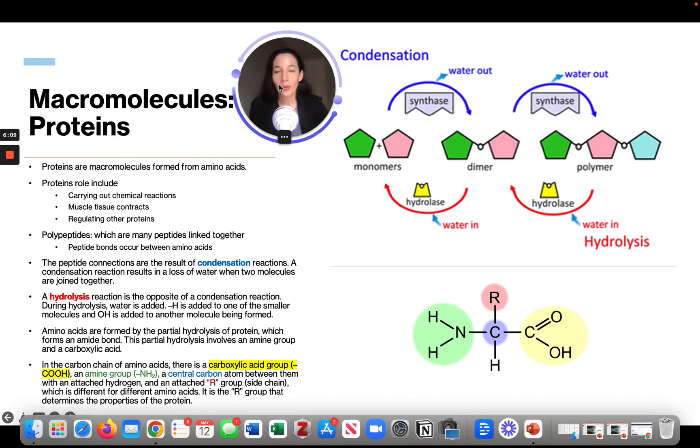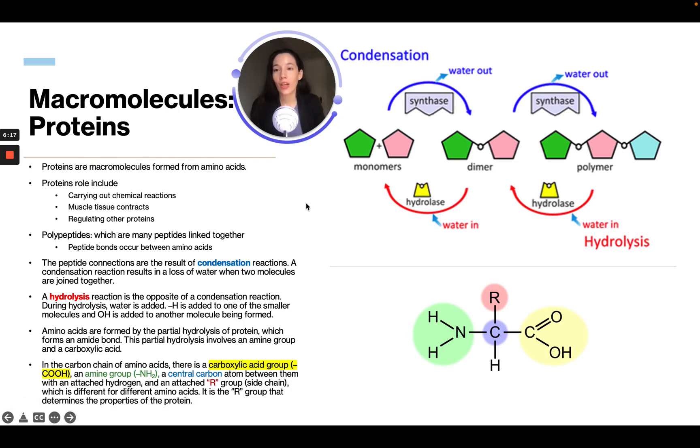Macromolecules: proteins. Proteins are macromolecules formed from amino acids. Protein's role includes carrying out chemical reactions, muscle tissue contractions, and regulating other proteins. Polypeptides are many peptides linked together. Polypeptide bonds occur between amino acids.